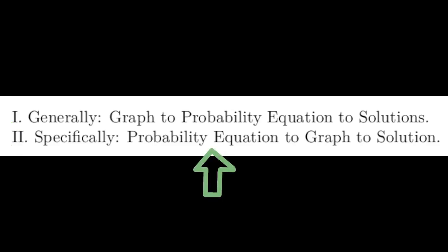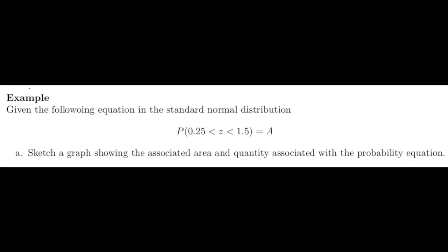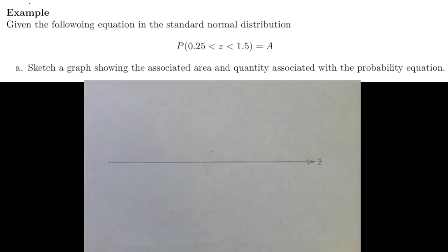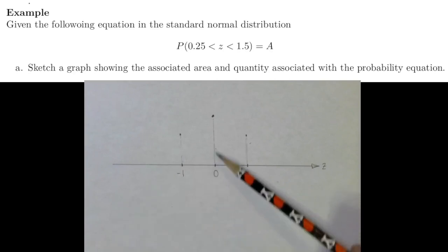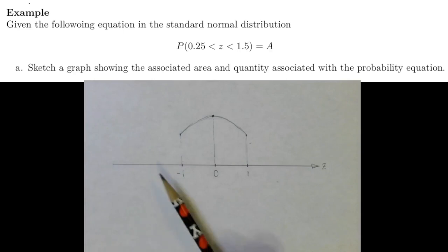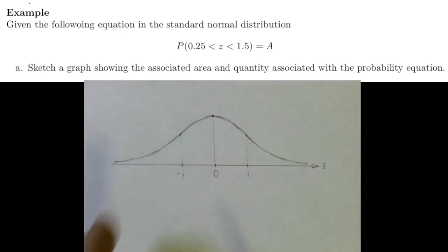In this problem we want to sketch the graph of a probability equation in a standard normal distribution, so we use Z as our variable. In a standard normal curve, the mean is at zero and the standard deviation is one. The high point of the curve is right at the mean, and at one standard deviation above and below the mean the height is about 60% of the high point. The curve is concave down within one standard deviation of the mean and concave up outside.